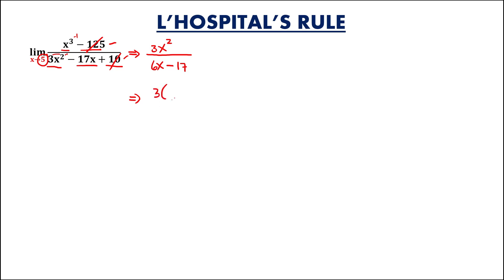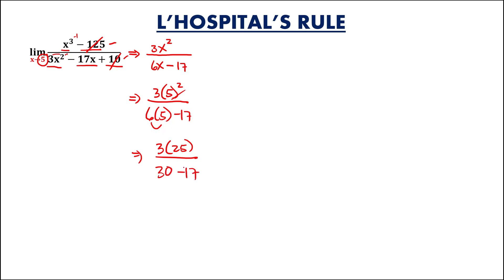As x approaches positive 5, this becomes 3 times 5 to the power 2, over 6 times 5 minus 17. This gives 3 times 25, which is 75, over 30 minus 17, which is 13. Therefore, the limit is equal to 75 over 13.